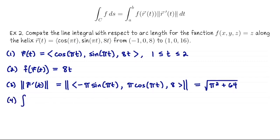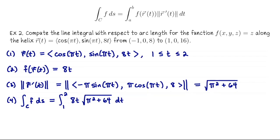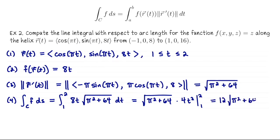Now we're ready to set up and solve the integral. This line integral we compute by integrating from 1 to 2 of 8t times the square root of π² plus 64 with respect to t. The square root of π² plus 64 is just a constant, so anti-differentiating 8t gives 4t². Evaluating the square root of π² plus 64 times 4t² from 1 to 2 gives 16 minus 4, so overall the answer is 12 times the square root of π² plus 64.